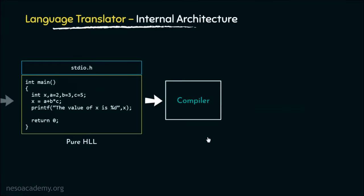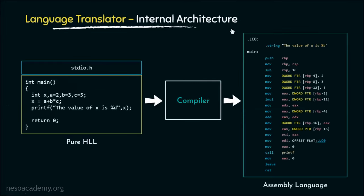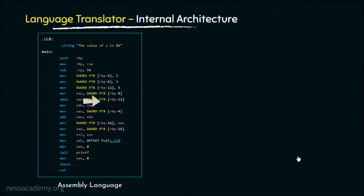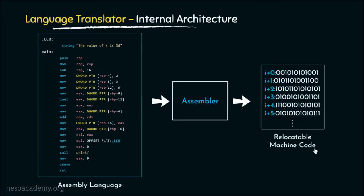The next one is the compiler. This phase will generate the equivalent assembly language code. As you can see, this is the assembly code of this pure high-level language code, and the compiler is responsible for this translation. Thereafter, the assembler will generate the relocatable machine code. Relocatable machine code is actually streams of 1s and 0s, which is the machine code. However, this is relocatable.